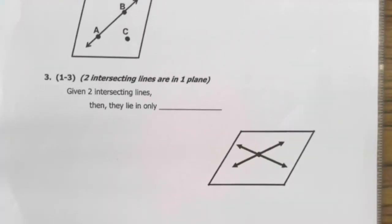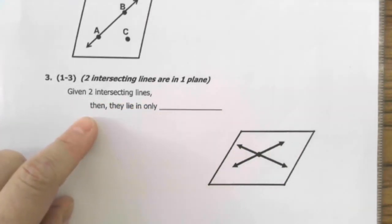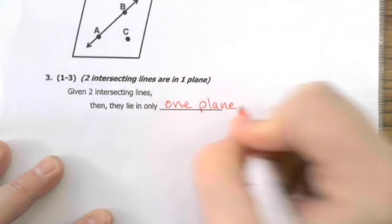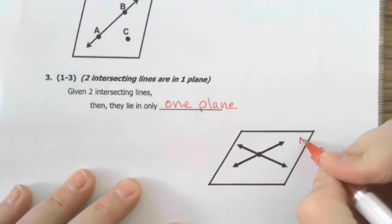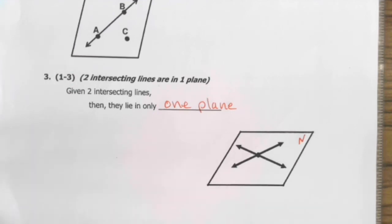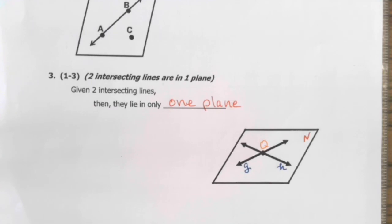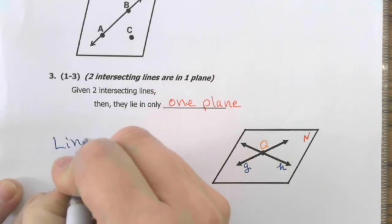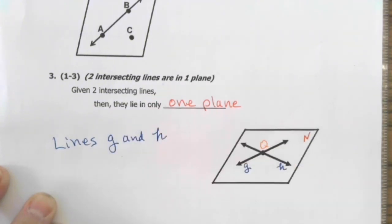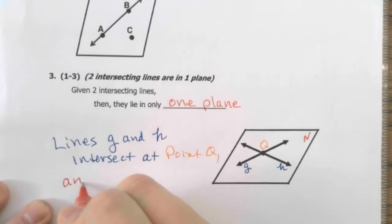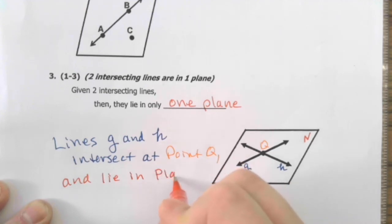All right, third one. 1.3. Given two intersecting lines, then they lie in only one plane. So let's call this plane N. And I'm going to use italicized names for the lines. This one here is italicized G. We just use cursive. This one here is italicized H. And they intersect at point Q, which is right there. So to restate this in terms of the figure that we see, we would say lines G and H intersect at point Q and lie in plane N.